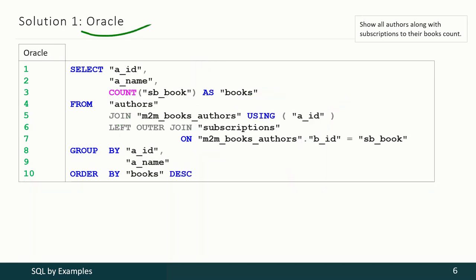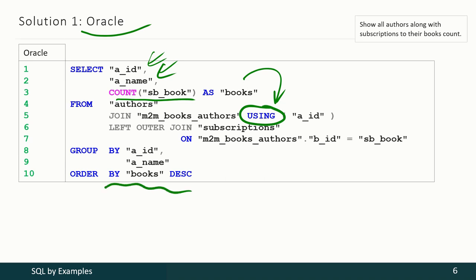With Oracle the solution is exactly the same as for MySQL. We are selecting author ID, author name, and counting the occurrences where a book was taken by a subscriber for each author. We also use the USING syntax, and we do not have to repeat the count call because we may reference the named result.